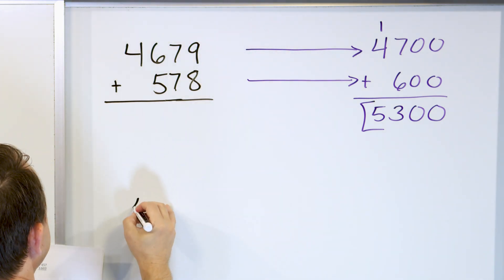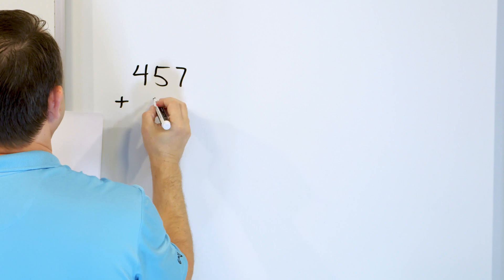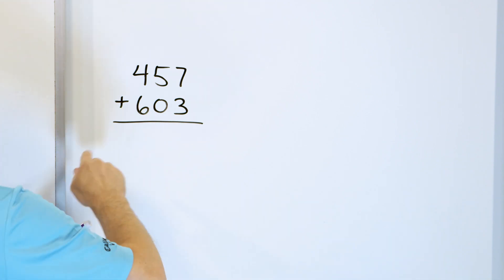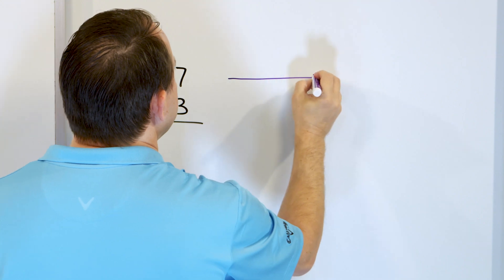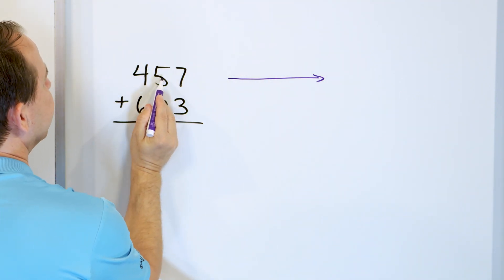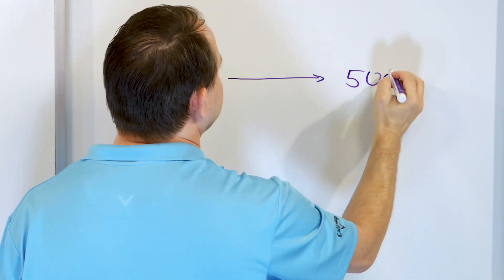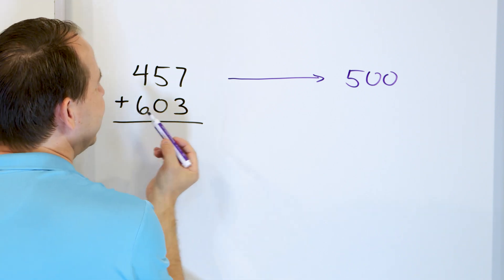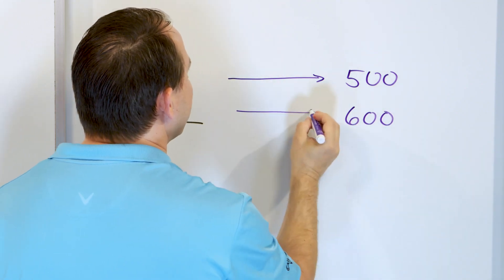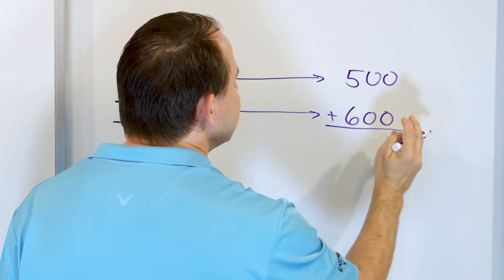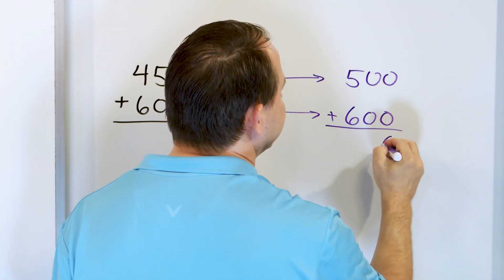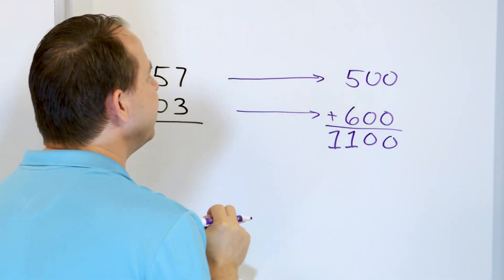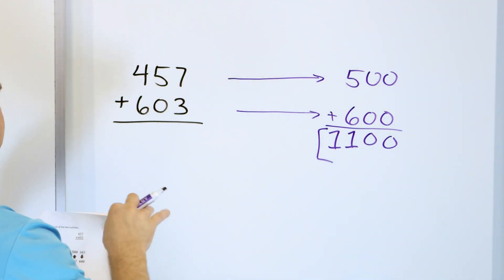Next problem: 457 plus 603. Estimate the addition of these two numbers. They have the same number of digits, so we can round to the hundreds place in both. For 457, we look next door — it's five or bigger — so it goes up to 500. For 603, we look next door to decide: it's much less than five, so it stays at 600. We round 457 up to 500 and 603 down to 600. Zero plus zero is zero, zero plus zero is zero, five plus six is 11. The answer is 1,100.